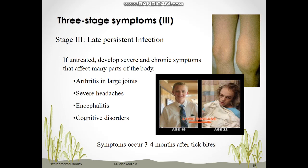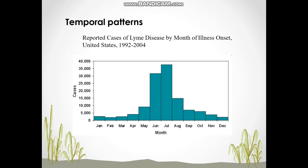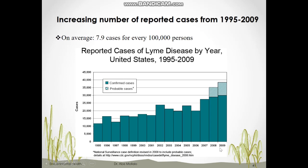Looking at the temporal pattern of reported Lyme disease in the US, the months with the highest number of infected persons are May, June, July, and August — late spring and summer — which corresponds to the most active seasons for ticks at the nymph stage. The number of human cases of Lyme in the US from 1995 to 2009 constantly increased from almost 12,000 cases per year, tripling to 30,000 cases per year. On average, eight cases per 100,000 people get Lyme disease.